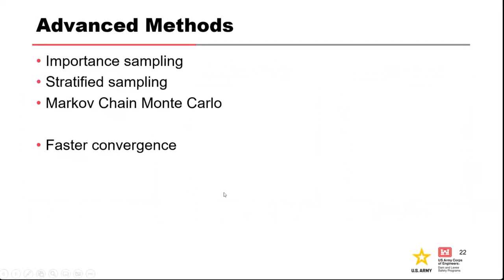A few advanced methods for Monte Carlo: importance sampling, stratified sampling, and Markov Chain Monte Carlo. These are used in various software packages including some within USACE. The main reason for these methods is that they're faster — they give us shortcuts so we need fewer random samples to converge to the solution.